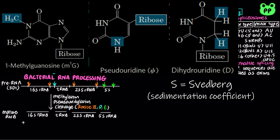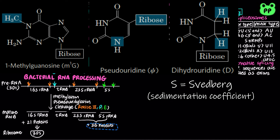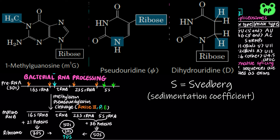The final mature 16S, 23S, and 5S ribosomal RNA products result from the action of a variety of specific nucleases. 16S ribosomal RNA combines with an additional 21 proteins to form the 30S small ribosomal subunit. 23S ribosomal RNA and 5S ribosomal RNA combine with an additional 36 proteins to form the 50S large subunit. During translation, the 30S subunit combines with the 50S subunit to form the 70S bacterial ribosome.